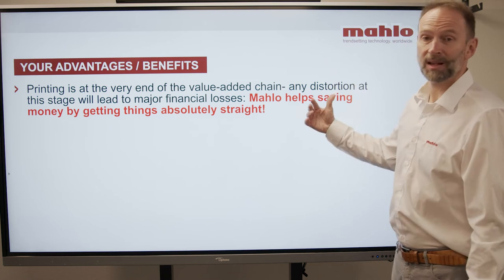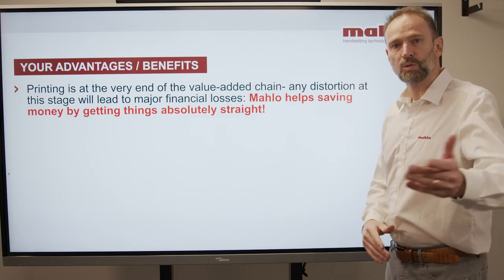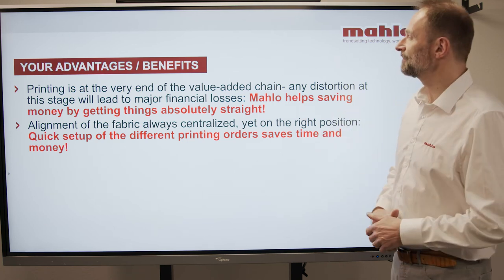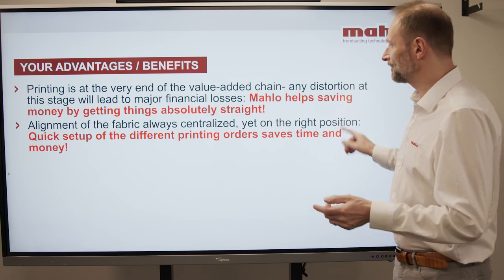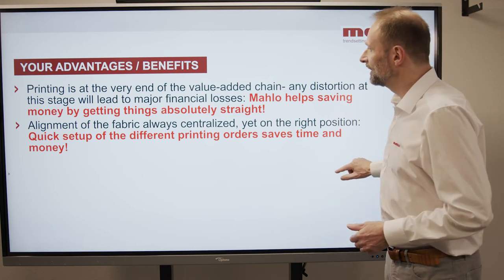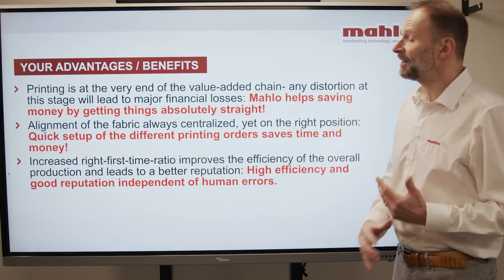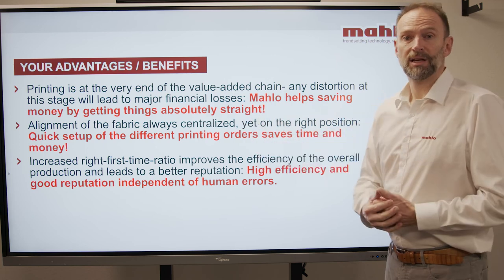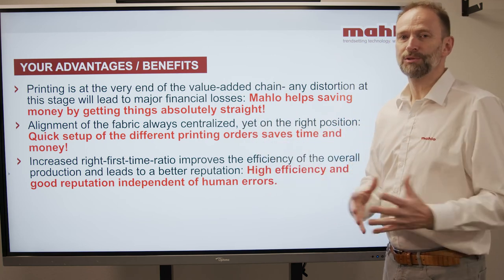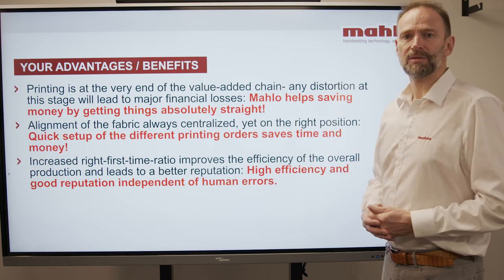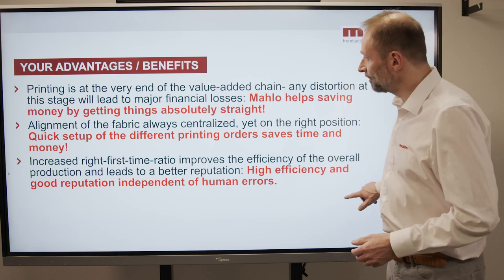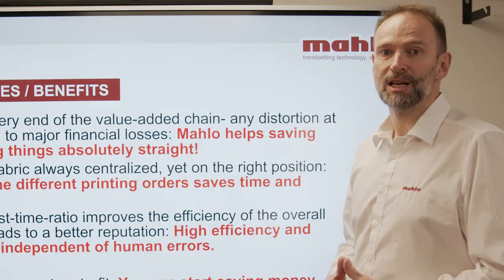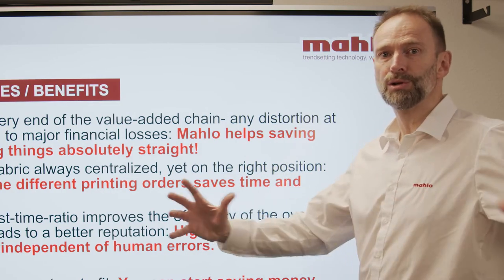Summarizing: printing is the very end of this value-added chain. You save a lot of money when you put the right machine at that space. The alignment of the fabric is sometimes centralized if you are looking at other printed goods, and we also have a solution for that. Very important for you: with an increased right-first-time ratio, you improve the efficiency of your overall production as well. Because when something goes wrong, you have to send that fabric back, and it costs a lot — you save a lot of problems by doing it right first time. The good thing is it comes in a modular assembly, so you can start putting that machine into your line today. Just give us a call.